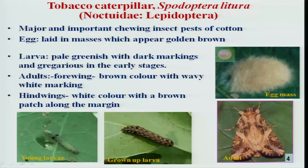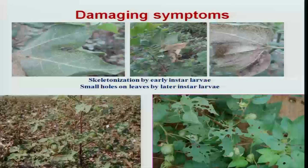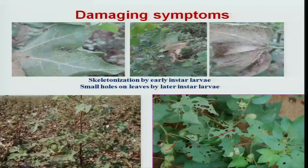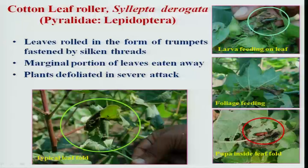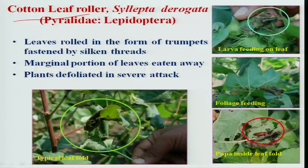Tobacco caterpillar occasionally or sporadically occurs on cotton, mostly acting as a defoliator and sometimes feeding on developing bolls. Cotton leaf roller is also an occasional pest, with the characteristic symptom of folding leaves and feeding inside them.